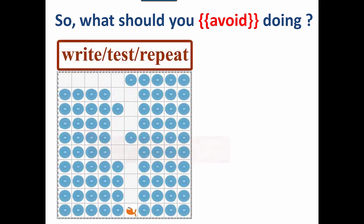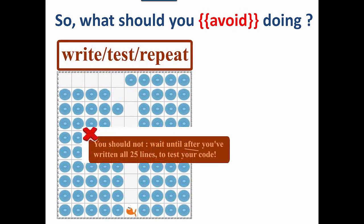And that means that you should not wait until after you've written all 25 lines before testing your code out. Here's what the first part of 25 lines worth of code looks like. As you can see there's lots and lots of places where it would be easy to make a small typo and you don't want to wait until you've written all 25 lines to try to figure out where that typo is.